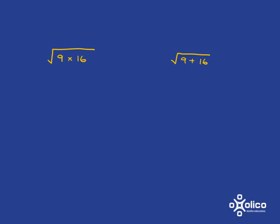So if we start with looking at the square root of 9 times 16, 9 times 16, if you work it out, it's 144 and the square root of 144 is just 12.